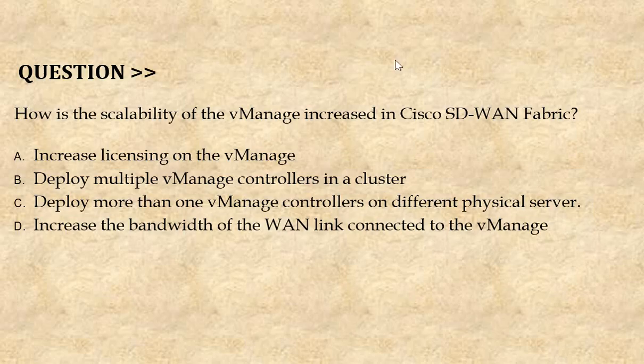Our next question is: how is the scalability of a VManage increased in Cisco SD-WAN fabric? Option A: increase licensing on a VManage. Option B: deploy multiple VManage controllers in a cluster. Option C: deploy more than one VManage controllers on different physical servers. Option D: increase the bandwidth of the VLAN link connected to the VManage. The correct answer is Option B.